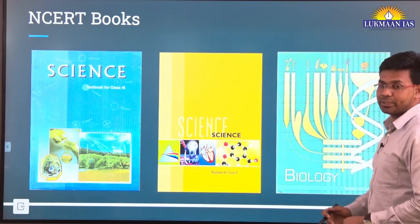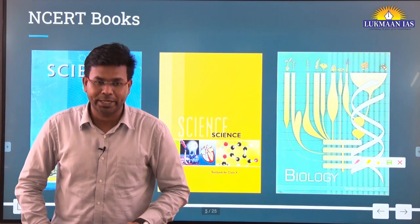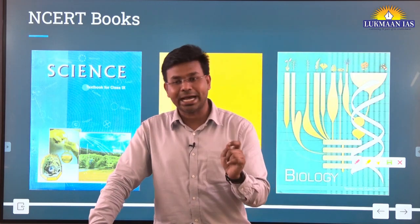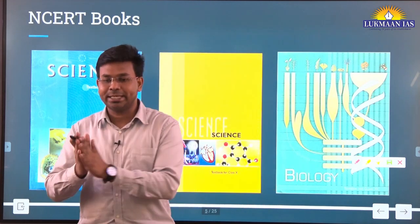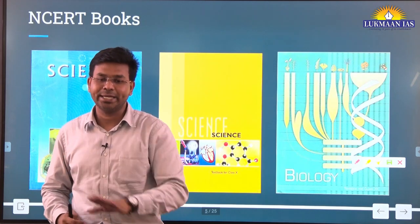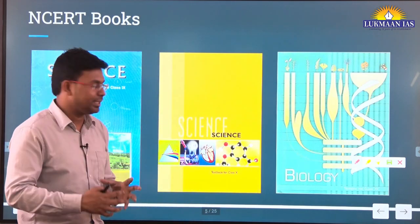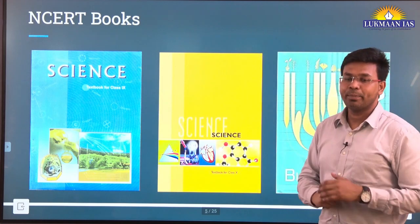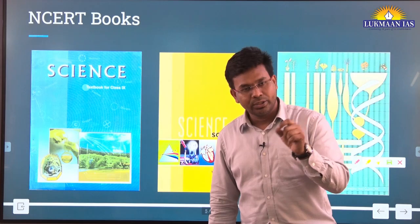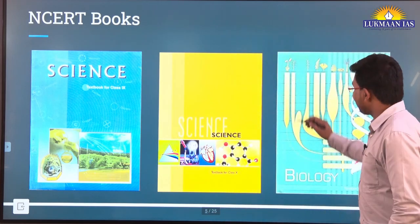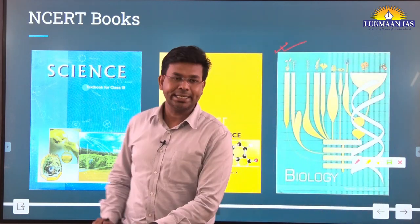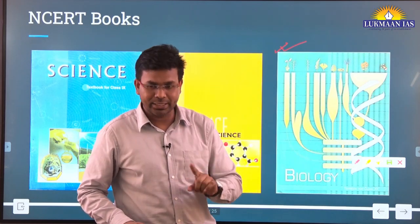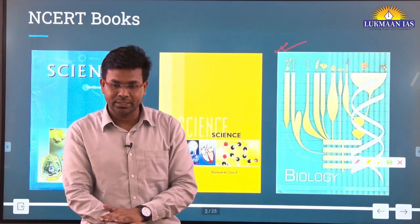For basic sciences, which NCERT books should we read? For students not from a science background — those who did not study science after 10th standard and took humanities — you can open the NCERT books of 8th, 9th, and 10th standard, skim through them, and read topics you are not familiar with to understand the basics. Apart from this, you should read the 12th standard biology NCERT book, since after 10th the subjects become more specialized.